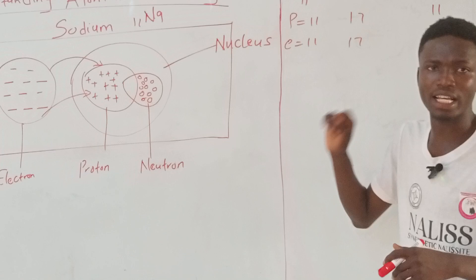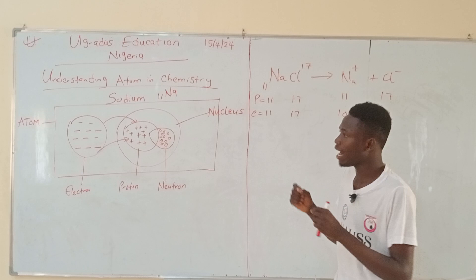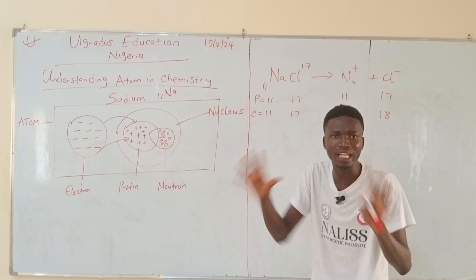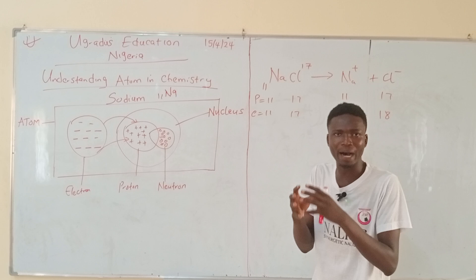Now, the final thing I would like to say is that there is nothing like protonic configuration. Instead, we have what we call electronic configuration. The reason we have electronic configuration is because electron is the only species inside the atom that is free, that is not bonded by any other membrane. But proton and neutron are bonded by the nucleus.